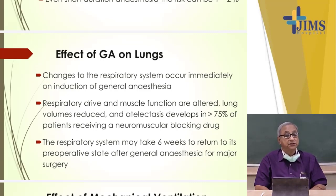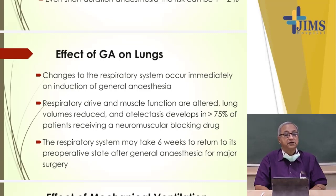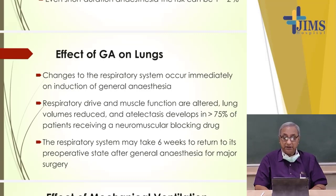The lung volume is reduced, and atelectasis develops in more than 75% of patients who receive a muscle relaxant — a neuromuscular blocking drug. The respiratory system may take at least six weeks to return to its pre-operative state after general anesthesia for any major surgery, meaning a surgery lasting more than one and a half hours.